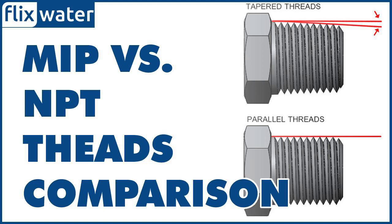NPT and MIP threads fit together but work best with their own fittings. Because both NPT and MIP fittings use the same thread angle, they are compatible with one another. However, the fact that NPT threads are tapered and MIP fittings are straight means they won't create the most airtight seal.